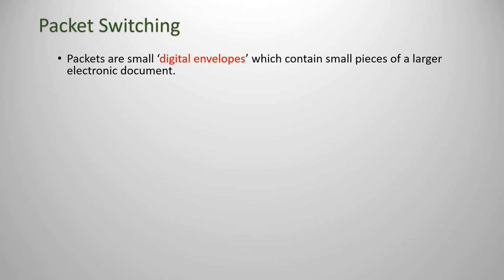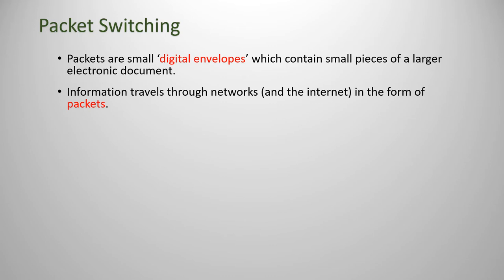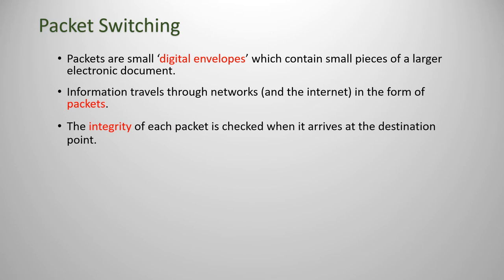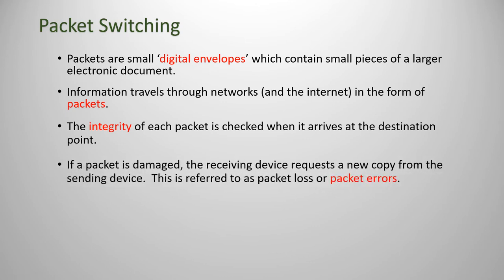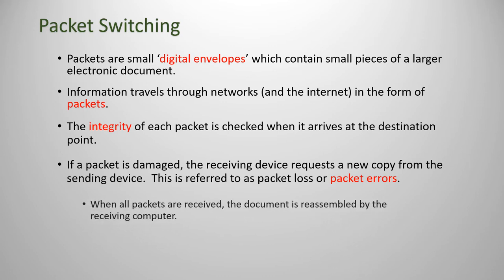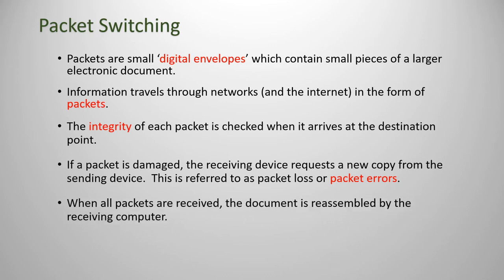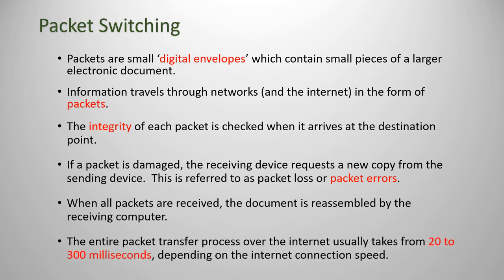Let's talk a bit more about packets and packet switching. Packets are small digital envelopes which contain pieces of a larger electronic document. Information travels through networks and the internet in the form of these packets. Each packet has its integrity checked when it arrives at its destination computer, and if it's damaged, the receiving device will request a new copy from the sending device — this is referred to as packet loss or packet errors. When all the packets are received, the document is reassembled by the receiving computer. This entire process commonly takes from 20 to 300 milliseconds depending on the speed of your internet connection.